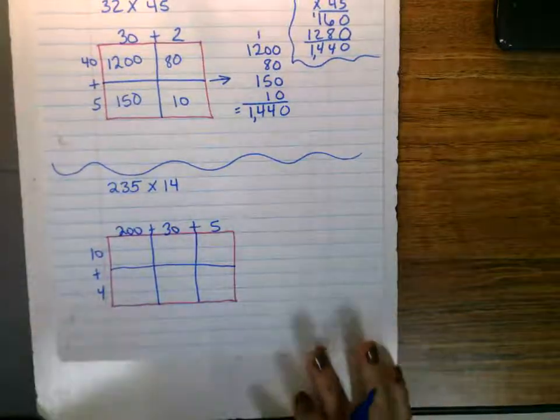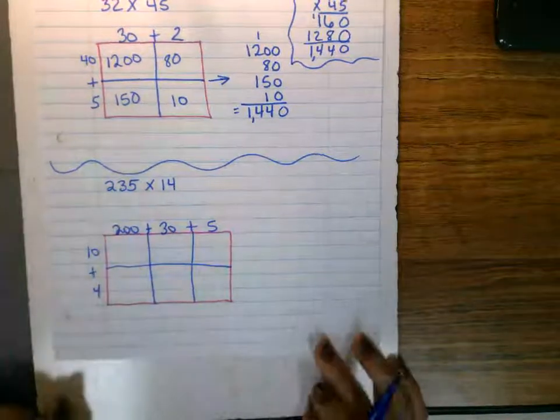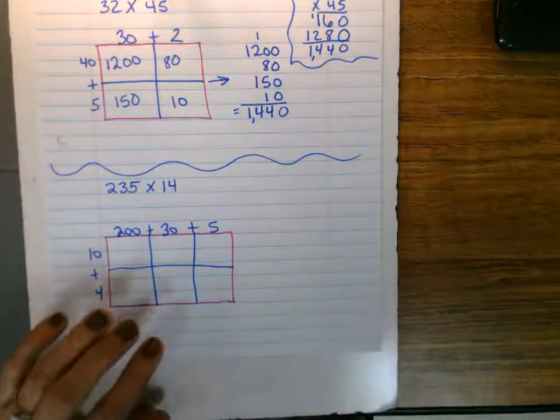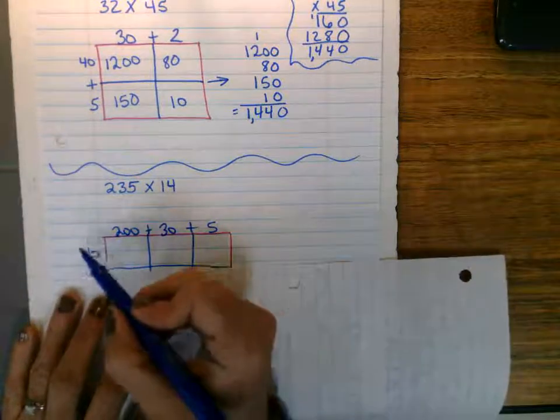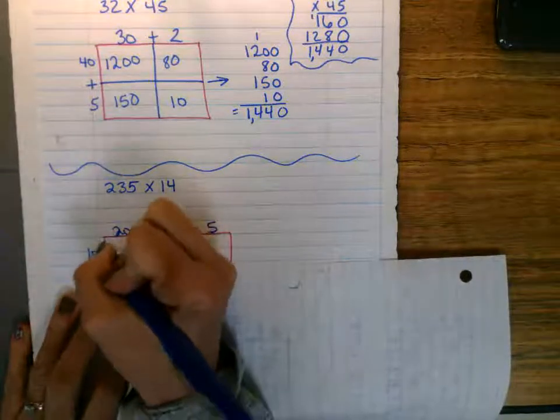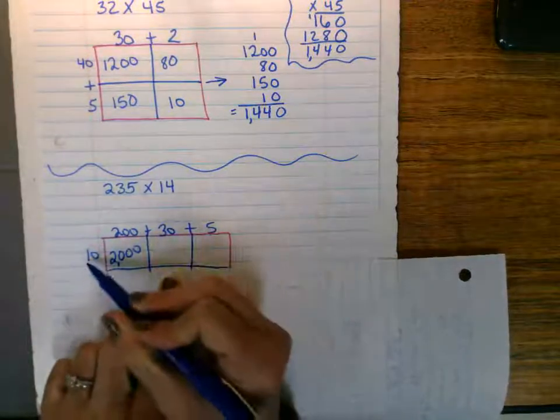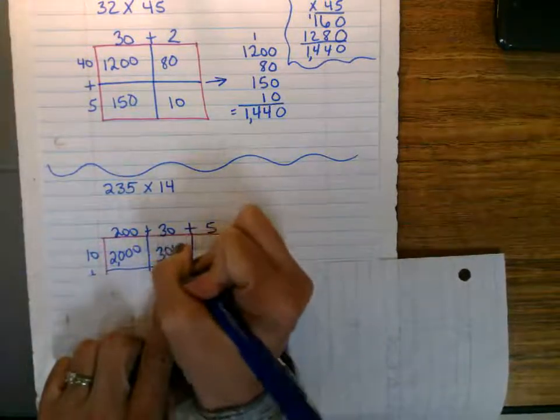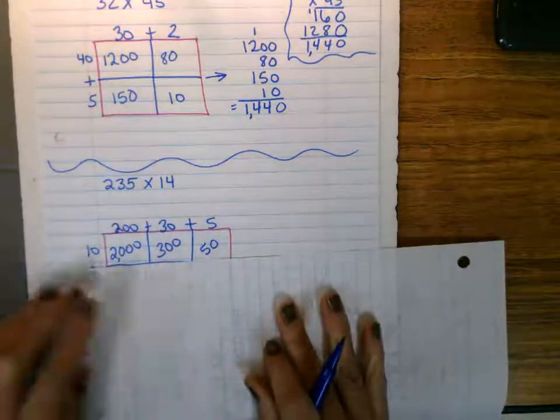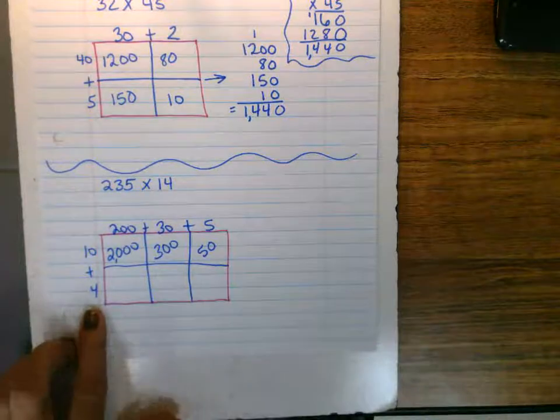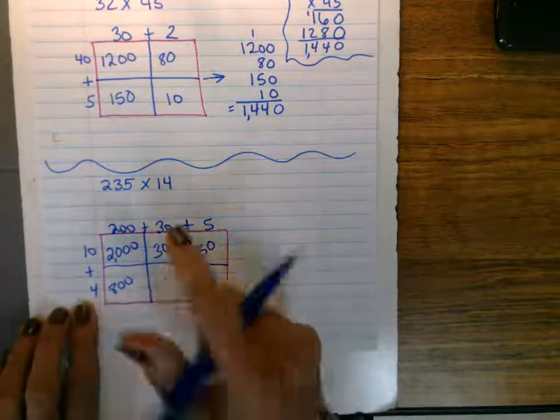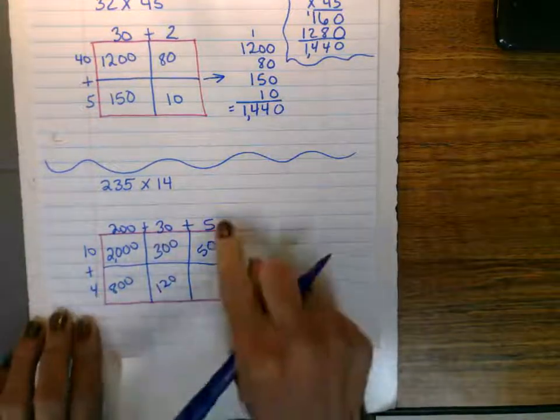So in this problem, I'm guessing you are seeing that it has 6 partial products because it is a 3-digit number. So we're going to have larger partial products. So again, I'm going to do the same. I can cover up the bottom. You don't have to. And I'm going to use my multiplying by zeros trick. 1 times 2 is 2 and add 3 zeros. Moving over. 1 times 3 is 3 and add 2 zeros. So 10 times 30 is 300. 1 times 5 is 5 and add a zero. All right, the bottom row, 4 times 200. So I'm going to do 4 times 2 is 8 and add 2 zeros. 4 times 30. 4 times 3 is 12 and add a zero. And then 4 times 5 is 20.